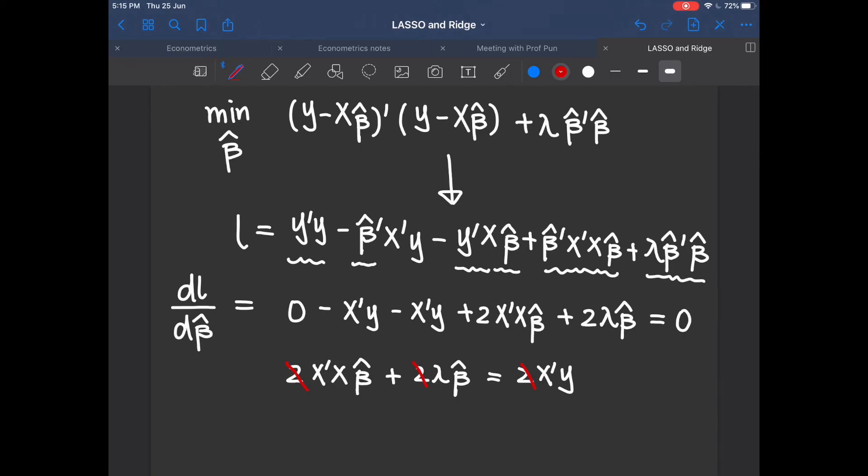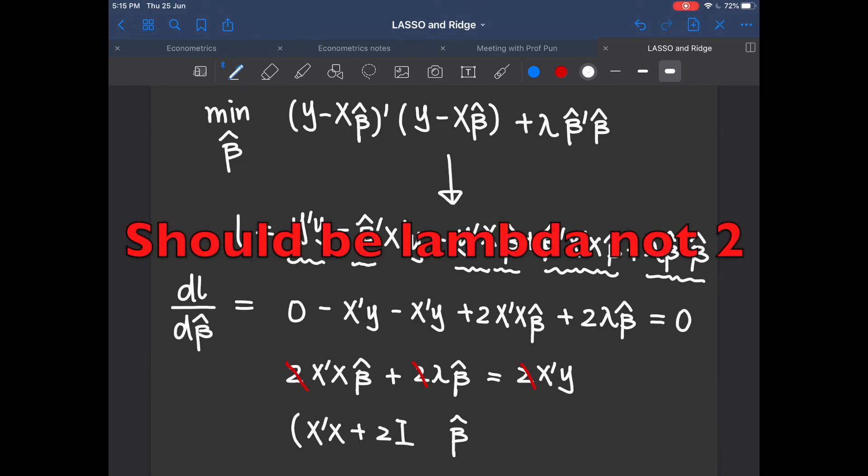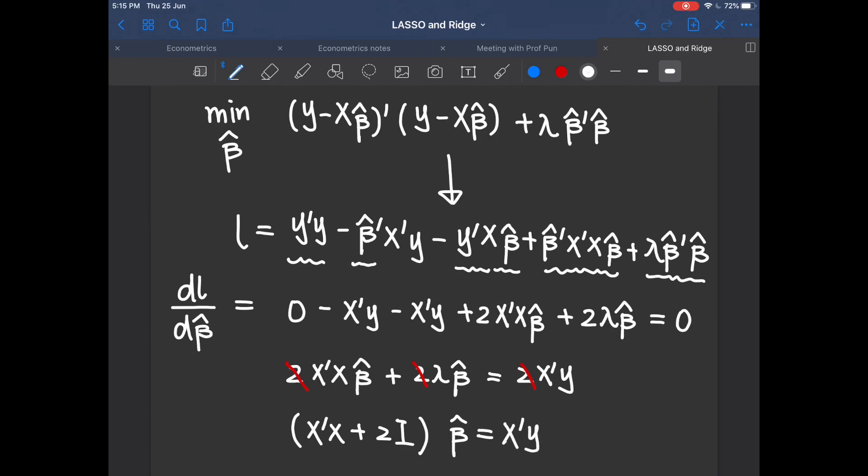Then you take out beta hat. So here the coefficient would be x transpose x plus lambda i, where i denotes the identity matrix. I add this in order to keep the consistency for the matrices. And then this expression is equal to x transpose y. So that gives you the expression for beta hat, which is x transpose x plus lambda i take inverse multiply x transpose y.